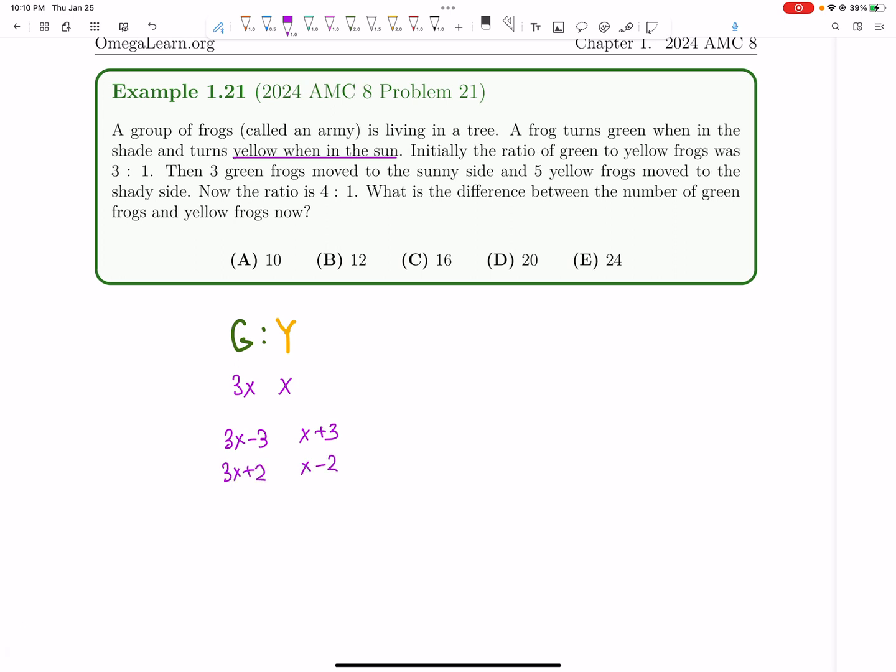And now we're given the ratio is 4 to 1. So we just have 3x plus 2 over x minus 2 equals 4, or 3x plus 2 equals 4x minus 8, so x is 10.